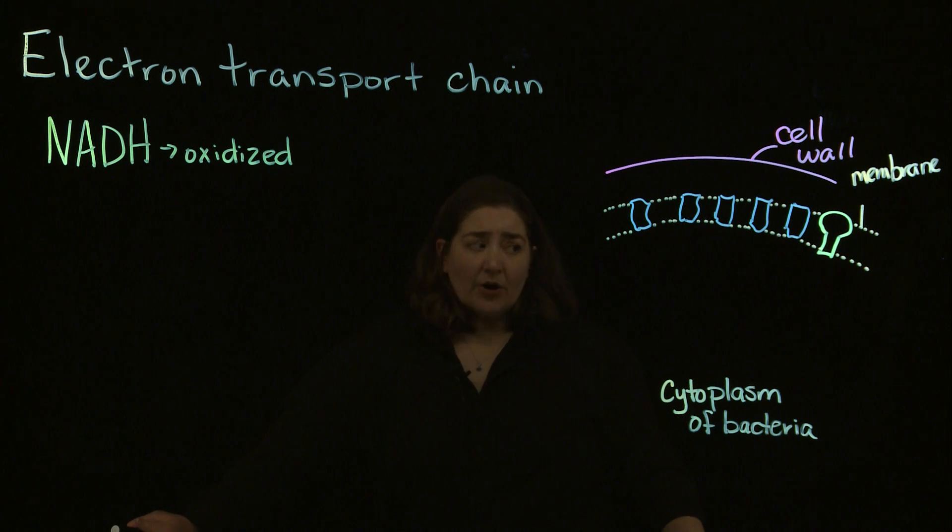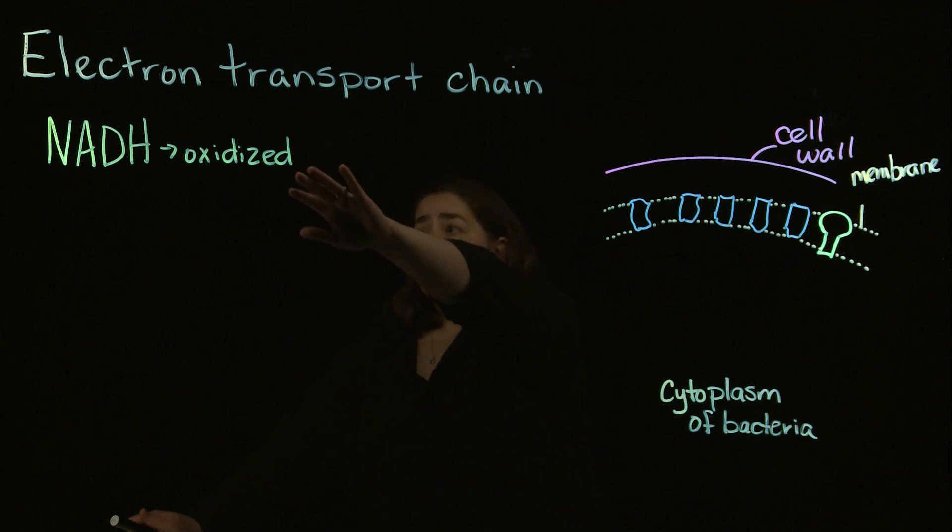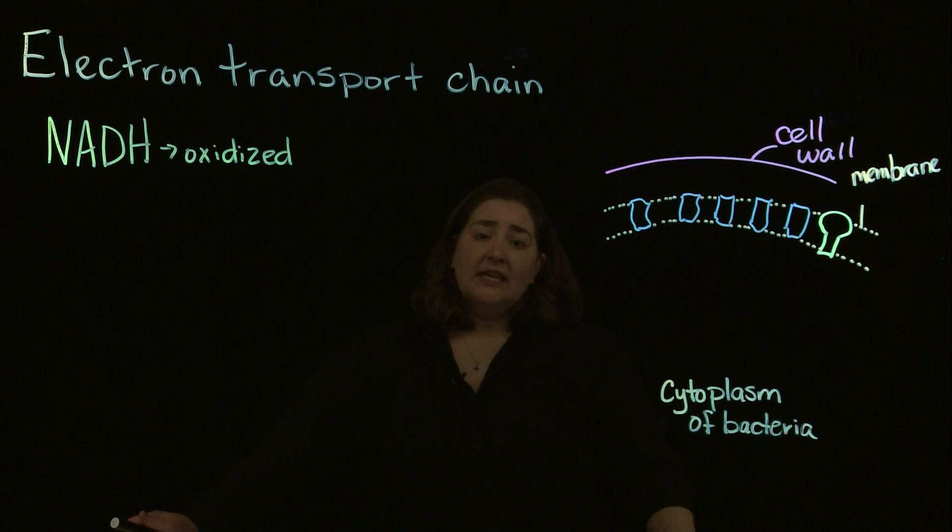So, the last part of cellular respiration in bacteria can include or does include an electron transport chain. The whole point of the electron transport chain is to oxidize that NADH that was generated in glycolysis and the Krebs cycle.